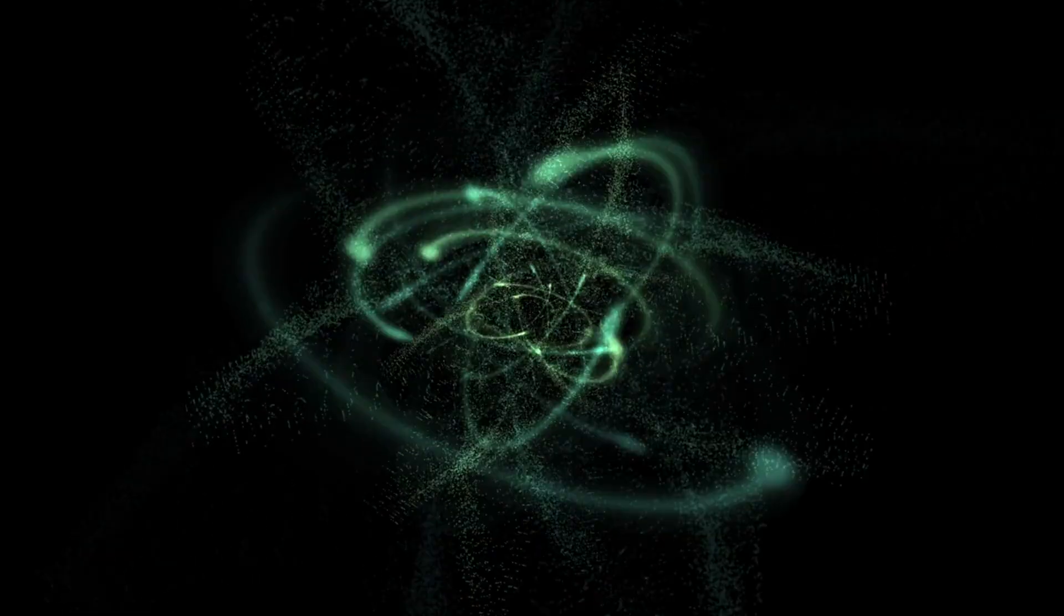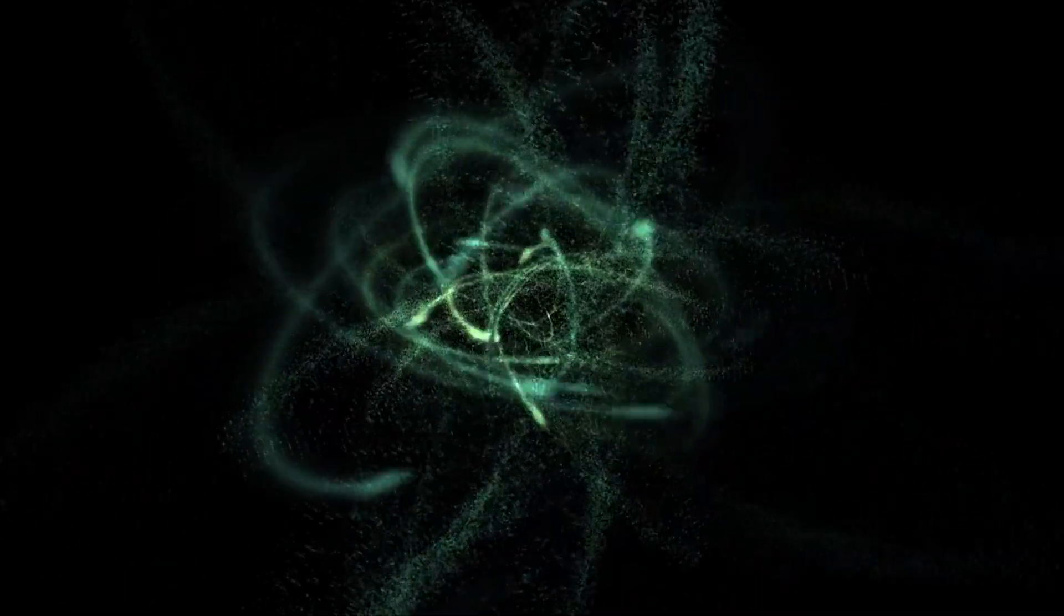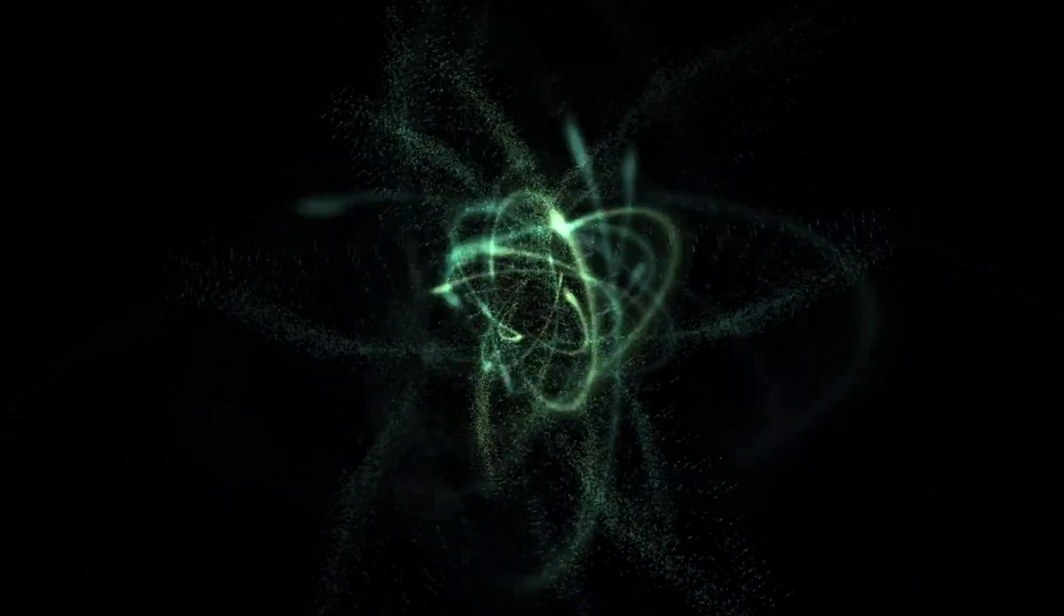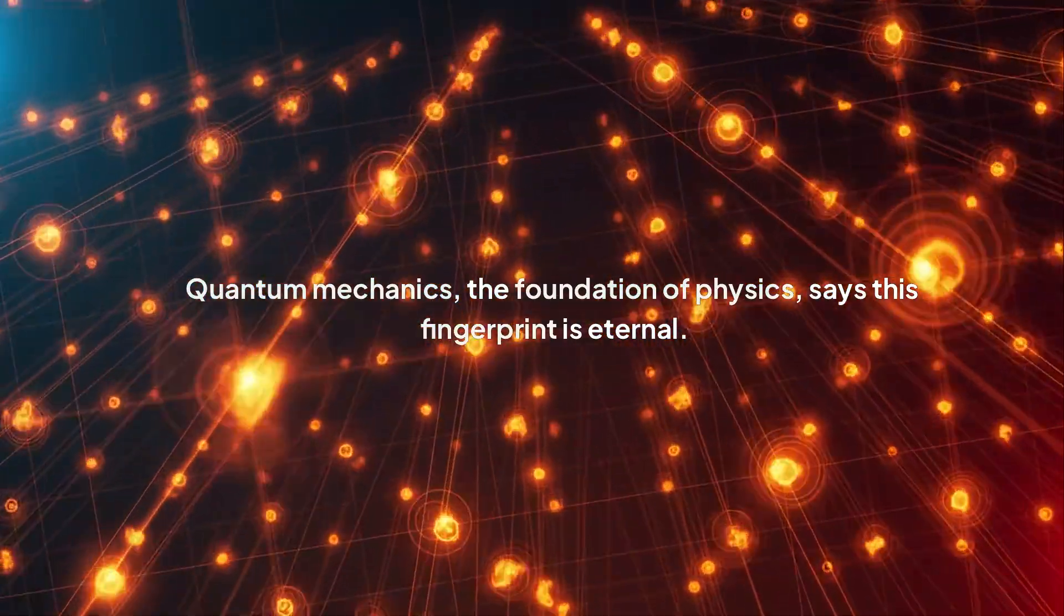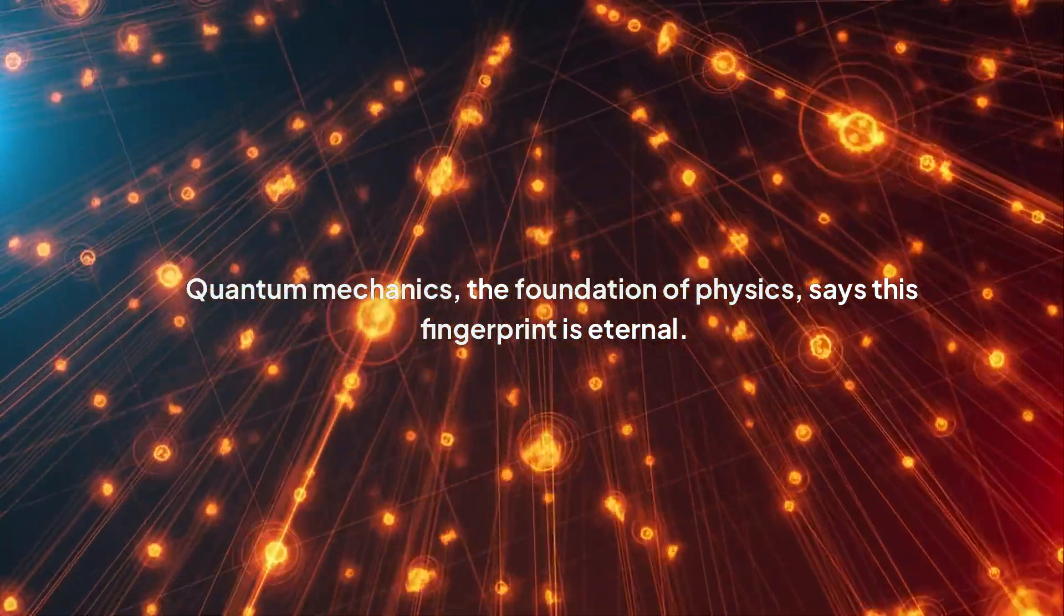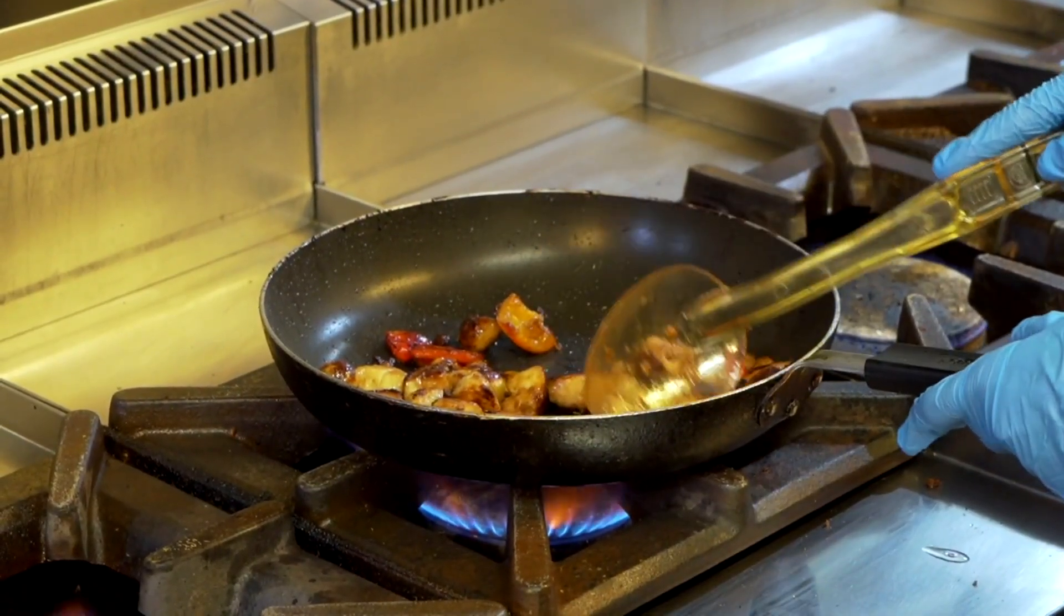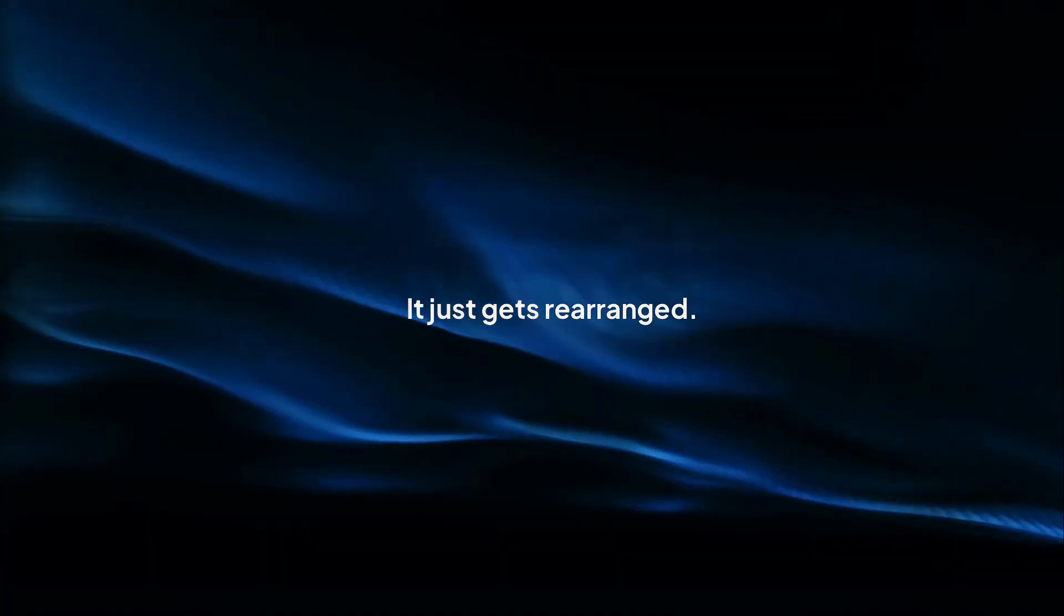Think of an apple. Its information is everything that makes it that apple, the quantum state of every atom, its mass, its spin. It's like a universal fingerprint that separates it from every other apple in history. Quantum mechanics, the foundation of physics, says this fingerprint is eternal. You can burn the apple, you can eat it, whatever. The information isn't lost. It just gets rearranged.